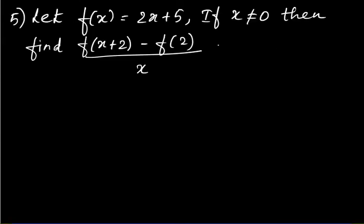Fifth question: let f(x) = 2x + 5. If x ≠ 0, find [f(x+2) − f(2)] / x. To find this, you need the values of f(x+2) and f(2). Find these two values separately and then substitute into the expression.